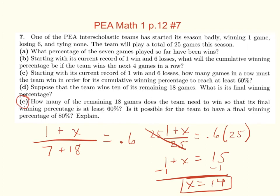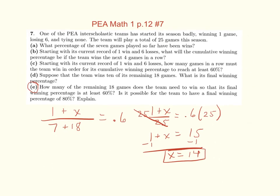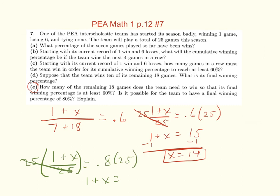And the last question was, is it possible for the team to have a final winning percentage of 80 percent? We can do the same idea: 1 plus X over 25 equals 0.8. We get 1 plus X equals 20, so X would equal 19. But the problem there is we only have 18 games left. So, not possible.